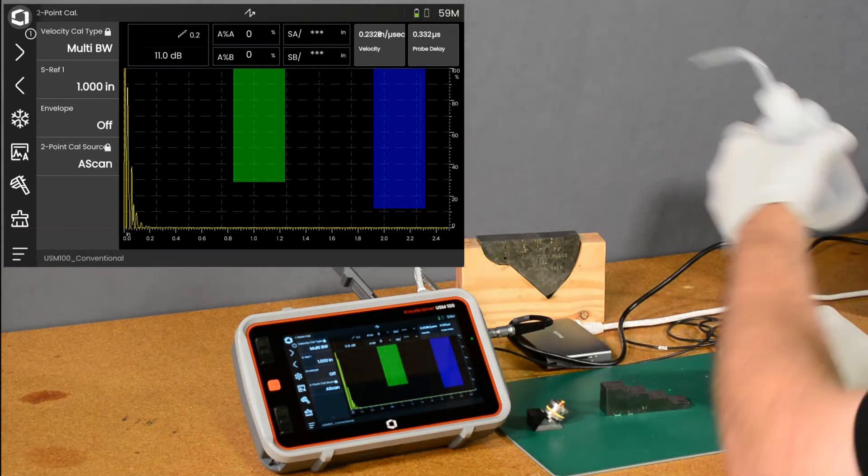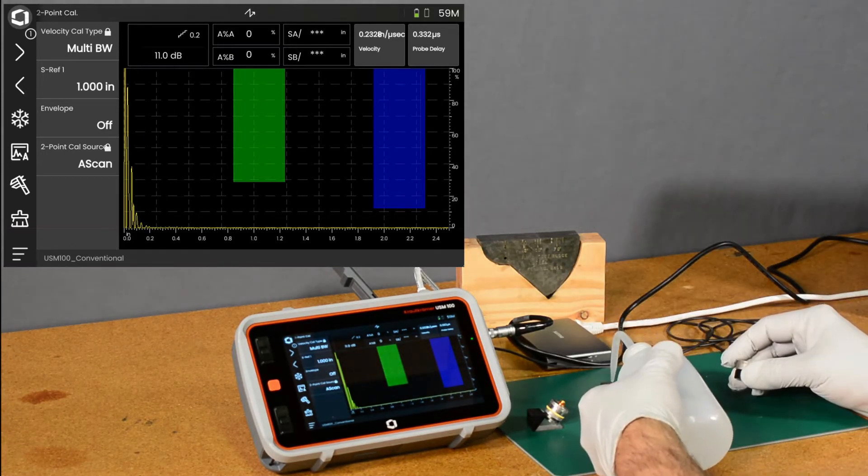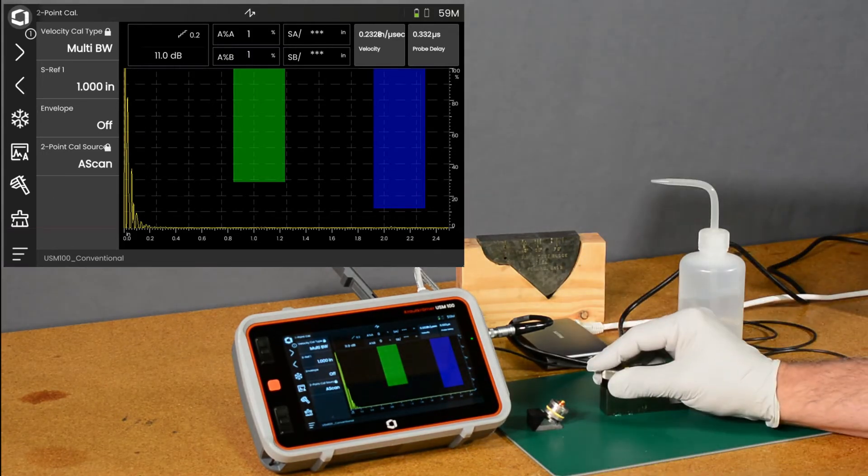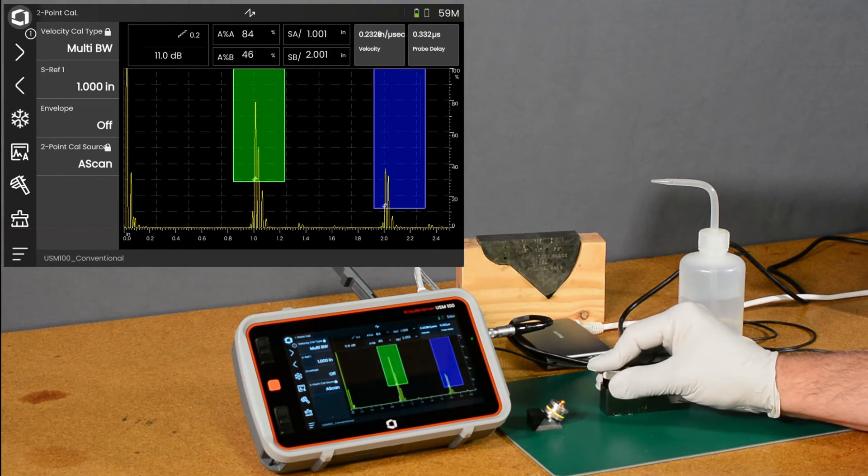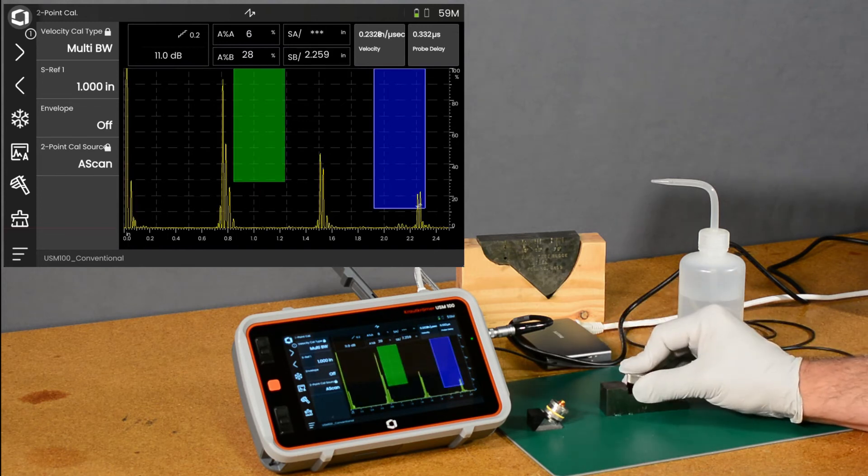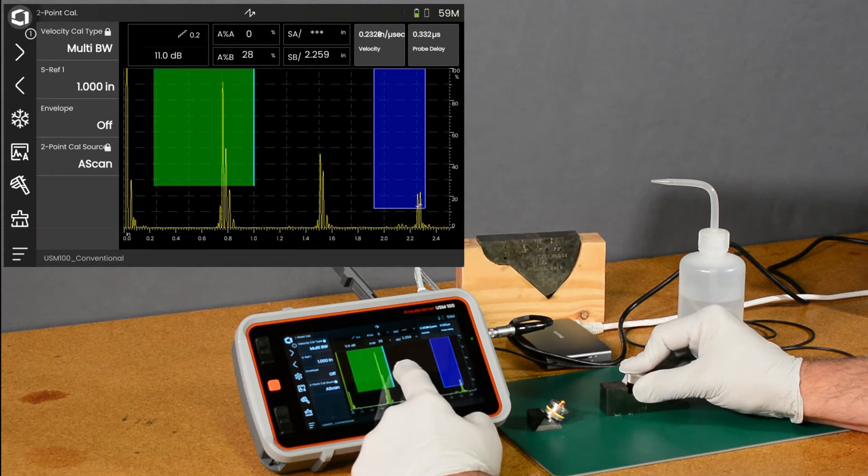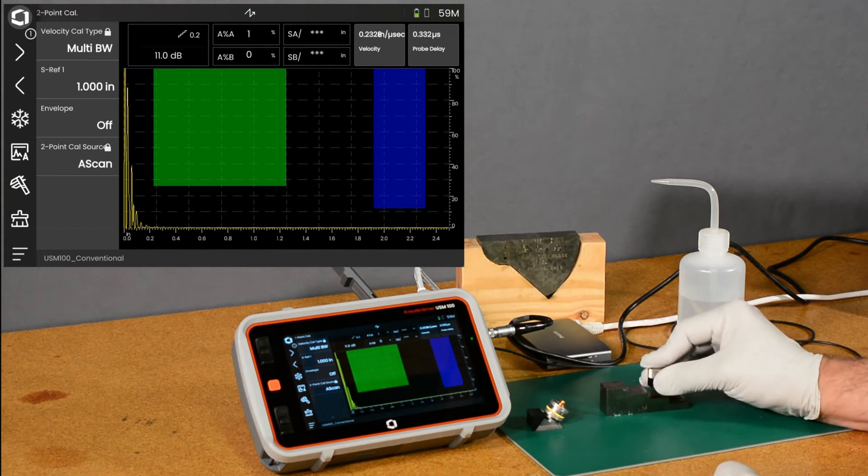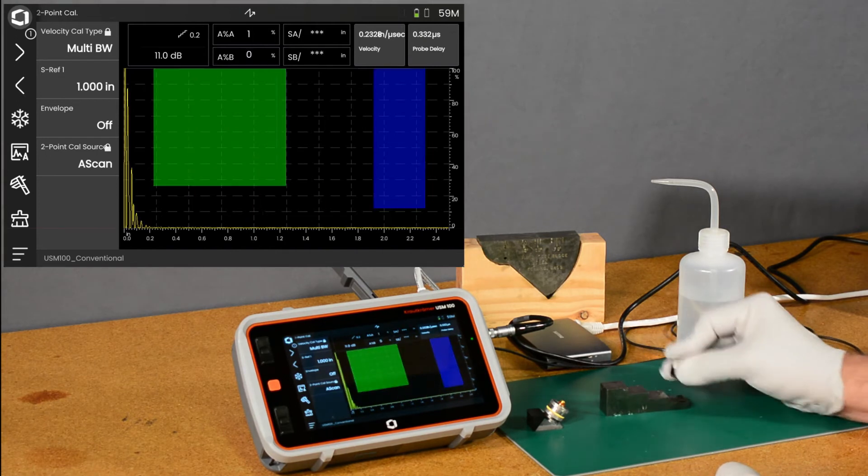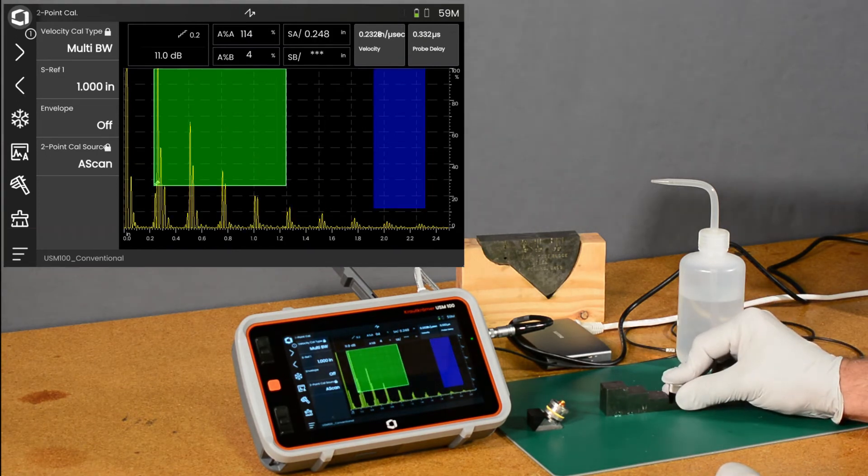0.999. Let's get a little more coupling on here. So there at an inch, three quarters of an inch. Let's drag our gate A here and make it a little wider so we can measure over the range. Half inch and a quarter inch.